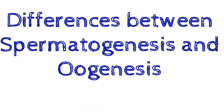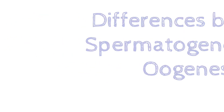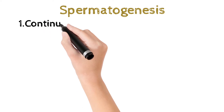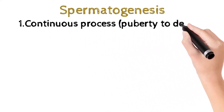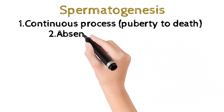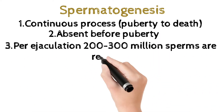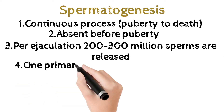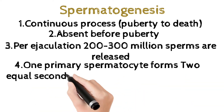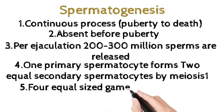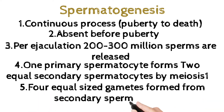Let's learn the differences between spermatogenesis and oogenesis. Spermatogenesis is a continuous process from puberty to death; it is absent before puberty. Per ejaculation, 200 to 300 million sperms are released. One primary spermatocyte forms two equal secondary spermatocytes by meiosis one, and four equal-sized gametes are formed from the secondary spermatocyte.